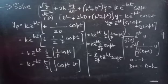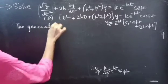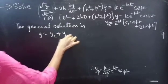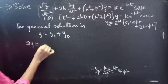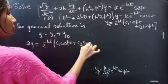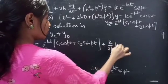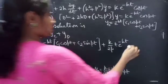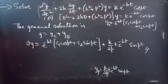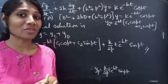Now let's write the general solution. The general solution is y = yc + yp, giving y = e^(−ht)·(c₁cos(pt) + c₂sin(pt)) + (k/(2p))·t·e^(−ht)·sin(pt). This completes the problem. We have solved a problem from higher order linear differential equations. Hope you understand — see you in the next video. Bye-bye.